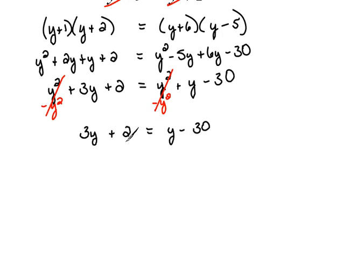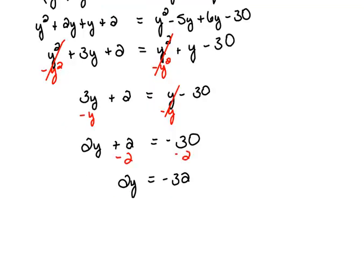And let's collect our y's. Let me subtract y from both sides to give us 2y plus 2 equals negative 30. And then we're going to subtract 2 from both sides so that we'll have 2y equals negative 32. And then dividing both sides by 2, we have y equals negative 16.